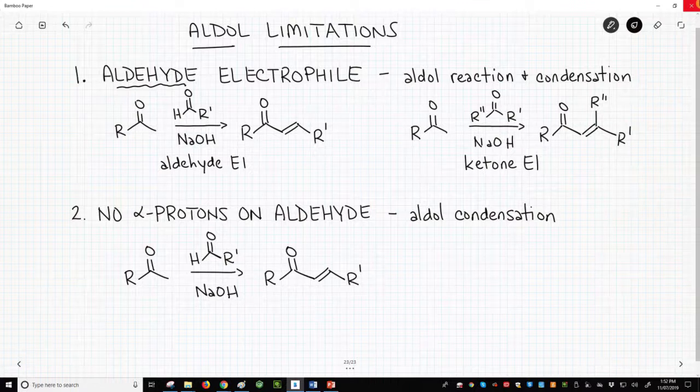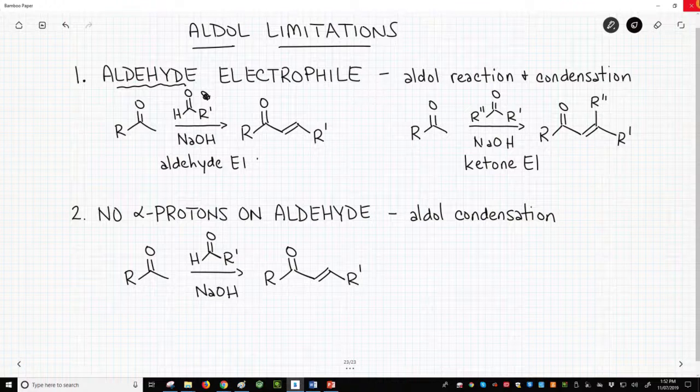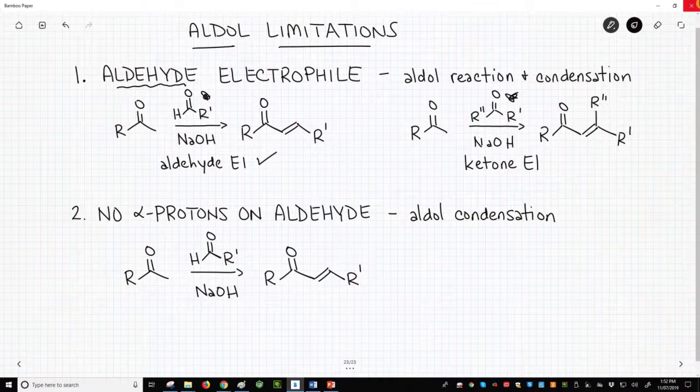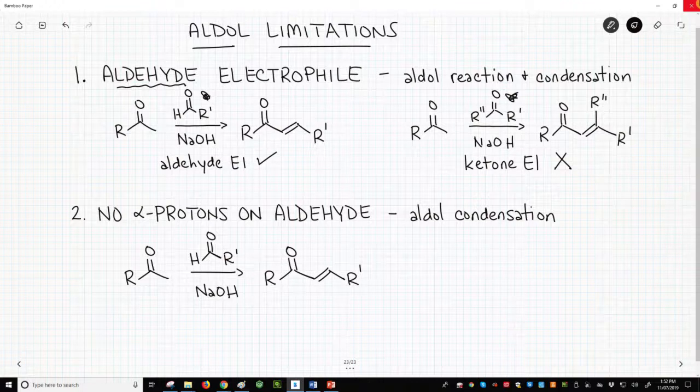In the left reaction, we have an aldehyde as the electrophile. This reaction will likely work. In the right reaction, we have a ketone as the electrophile. The right reaction will likely have problems. So stick to aldol chemistry, in which the enolate comes from a ketone and the electrophile is an aldehyde.